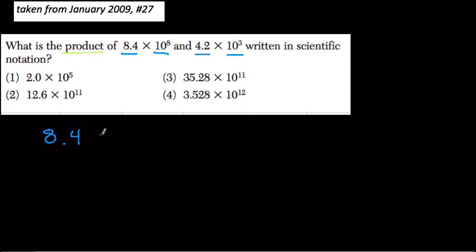Well, 8.4 and 4.2 and 10 to the 8th and 10 to the 3rd are all being multiplied, and that's wonderful, right? When you're multiplying, and you're only multiplying, or you're only adding, you can use the commutative and associative properties to really do whatever you want. To regroup and change this in any way you need to. So what do we do? Well, I'm going to regroup and reorder.